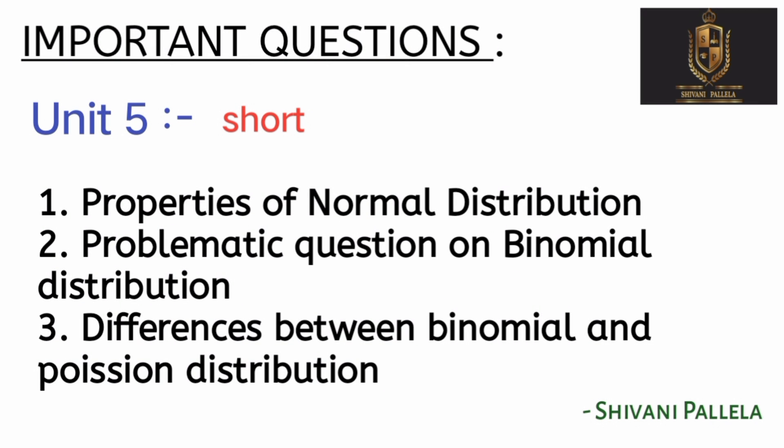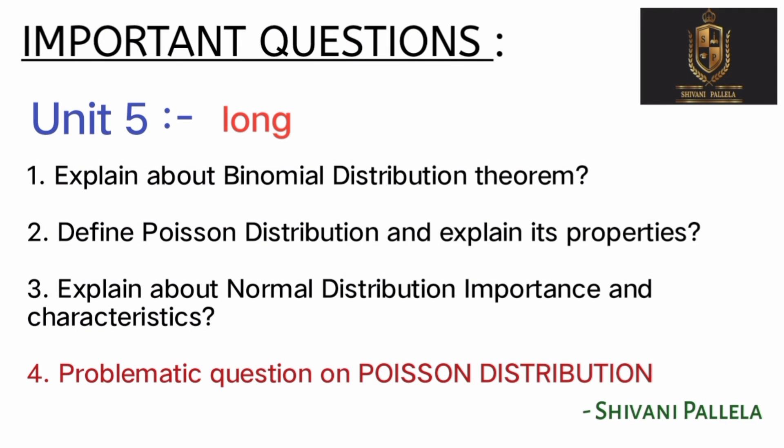Unit 5 short: two theory questions are important — differences between binomial and Poisson distribution, and properties of normal distribution. You also have to find the binomial distribution. Unit 5 long has three theories and one problematic. Problematic is higher chance for Poisson distribution; theory also has higher chance. It is very easy to practice.